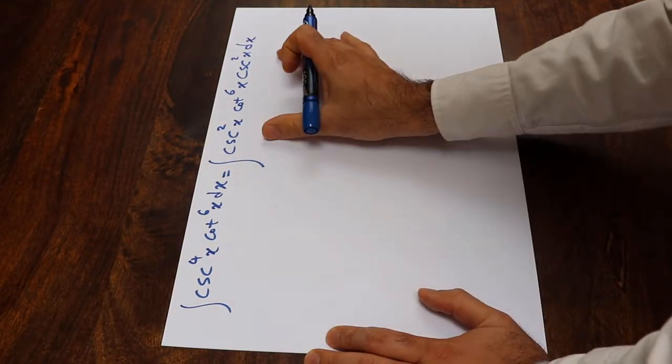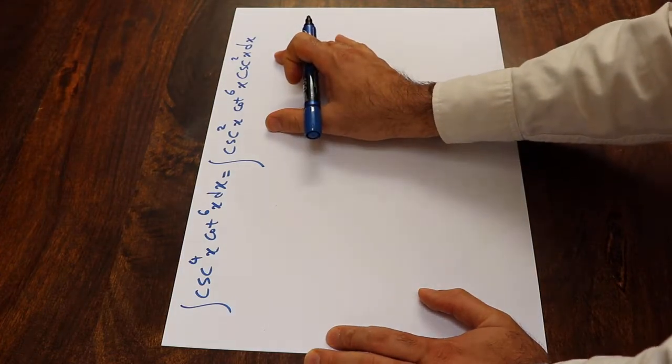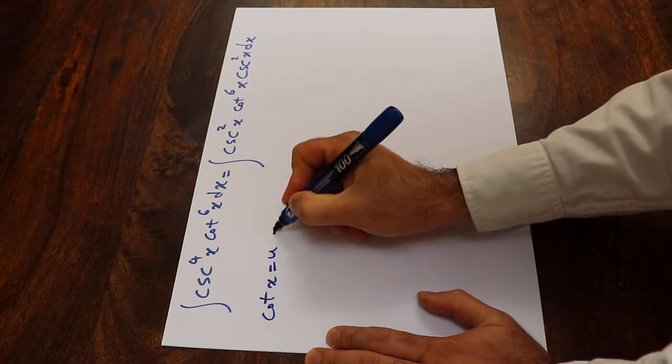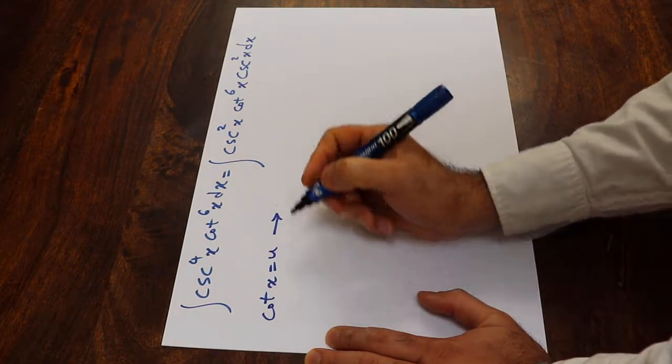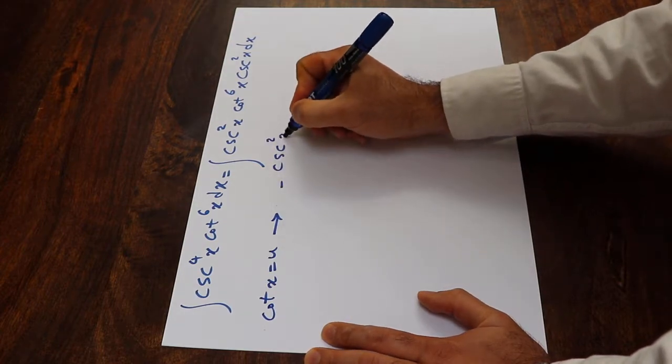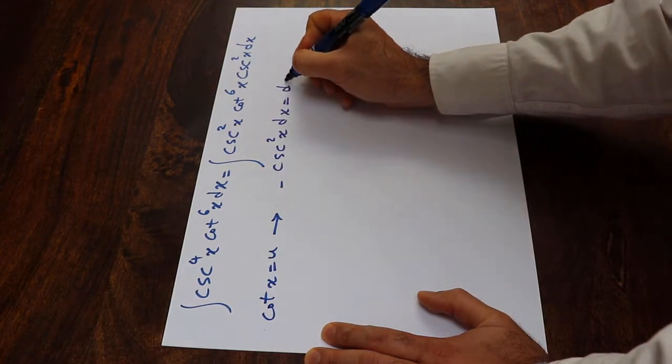Now this integral you can solve using the substitution rule. If you define cot x as u and take the derivative from each side of this equation, derivative of cot x equals minus cosecant squared x, so dx equals du.